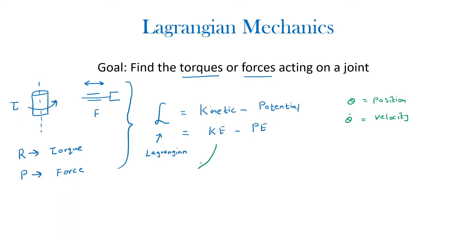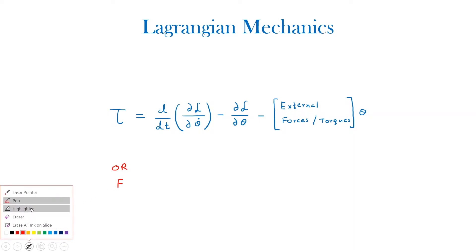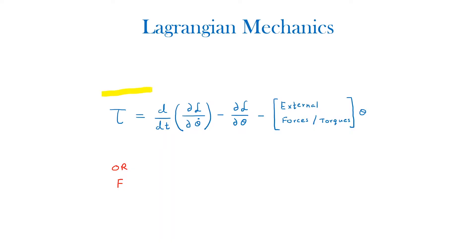To find the kinetic energy, we use the equation half mv squared, where the v squared term will contain theta dot. And the potential energy would simply be mgh, where the height term would contain theta, which is the position. So once the Lagrangian has been calculated, we can then find the torques or the forces acting on the joints of the robot using this equation.